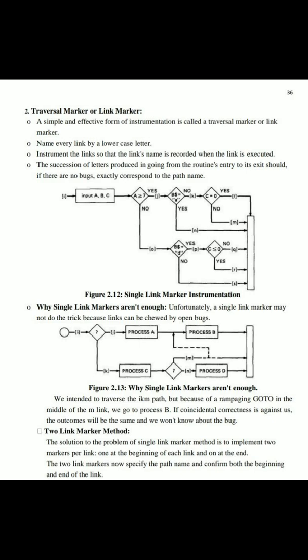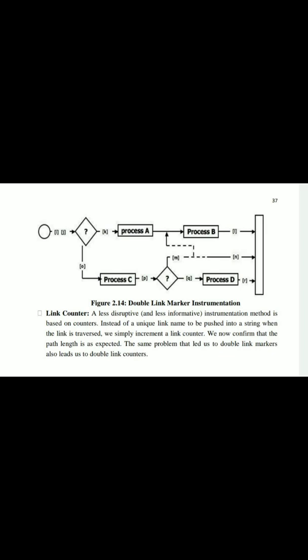Two Link Markers method: the solution to the problem of the single marker method is to implement two markers per link — one at the beginning and one at the end. As shown in the diagram: first, link i-j starts; next before process k, a start marker; after process k, an end marker; then link l; before decision o, a start marker for o; after that, start of process c, with start and end markers; then decision p with a start marker — so each link has both a start and end marker. This way we can confirm that each link was completely and correctly traversed.